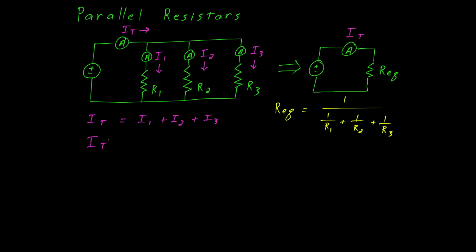With the help of Ohm's Law, we can show that current 1 is equal to the voltage, shown here in red, divided by resistor 1. Likewise, we can show that I2 is equal to the voltage divided by R2, and I3 is the voltage divided by R3.